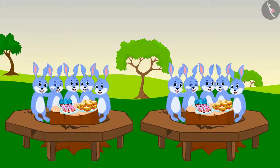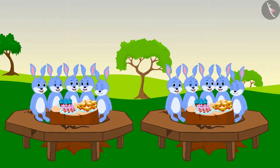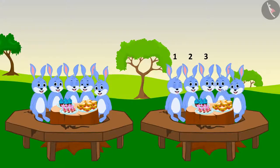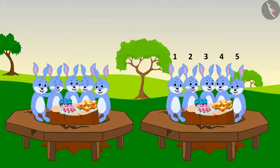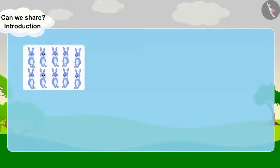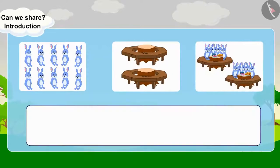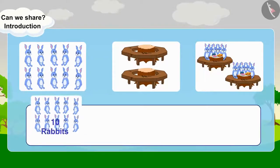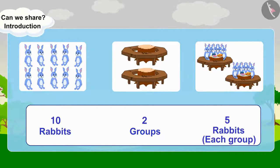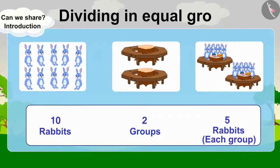There are ten rabbits and they are sitting in two groups. Each group has one, two, three, four, five rabbits seated in them. A total of ten rabbits are seated in two groups, each group having five rabbits. It is called dividing in equal groups.